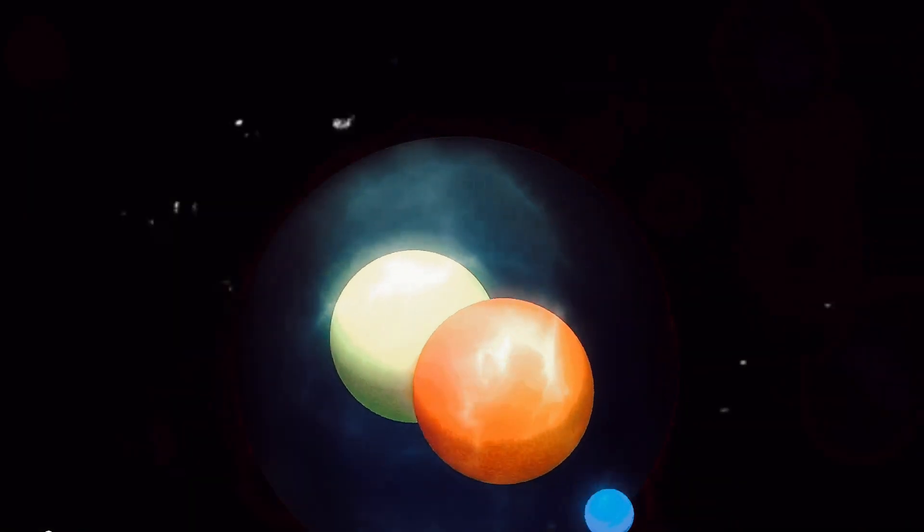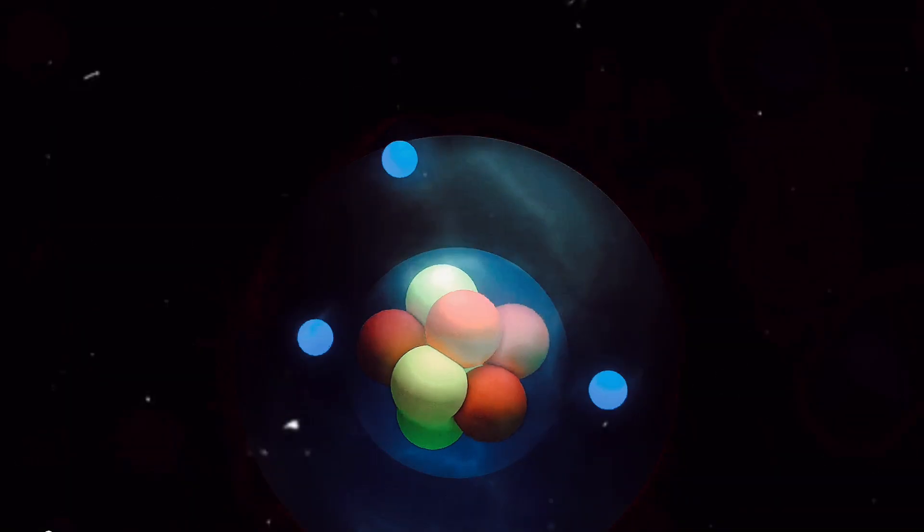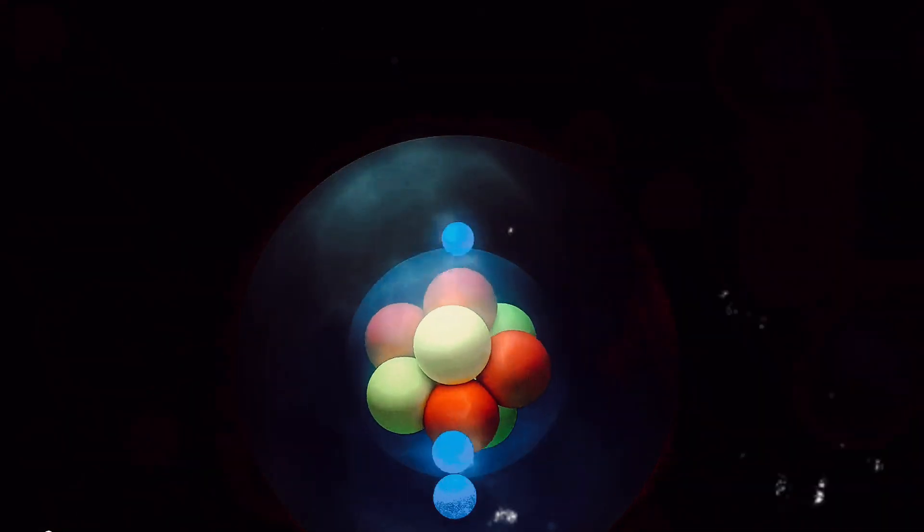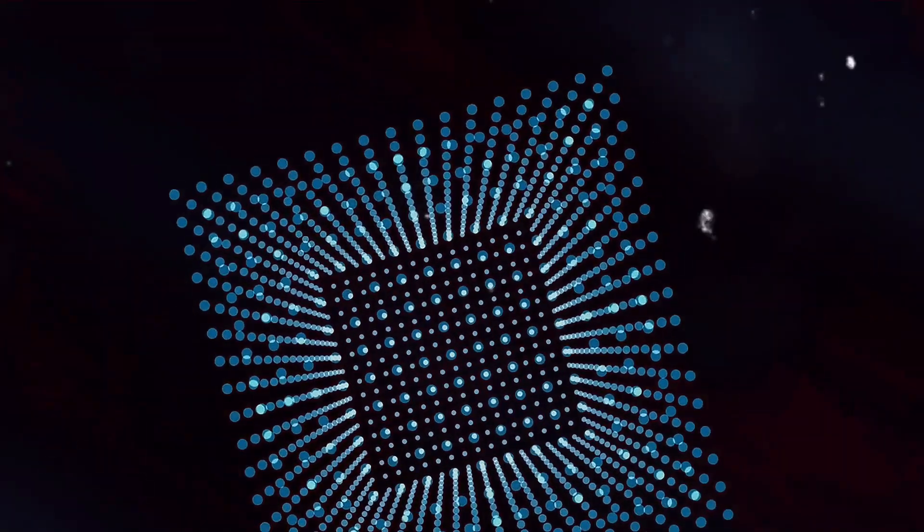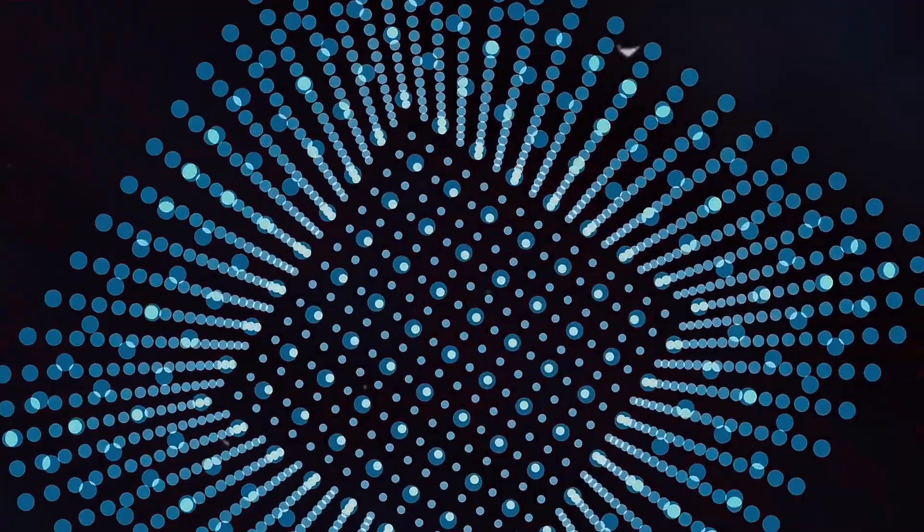Now, think about that for a moment. Every solid object you see, every surface you touch, is essentially a cloud of repelling electrons. This unseen force is the reason why you can sit in a chair without falling through, why buildings stand, and why planets don't collapse into themselves. The repulsion between electrons is what gives matter its structure. So the next time you feel the solidness of the world around you, remember, it's all thanks to the power of repulsion.